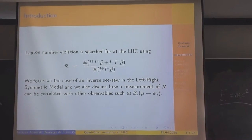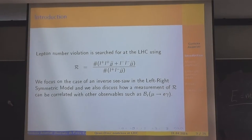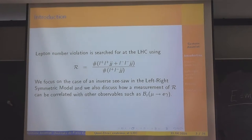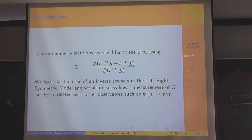The lepton number violation is studied at LHC using same-sign lepton production plus two jets, and opposite-sign lepton production plus two jets, from the production and subsequent decay of heavy neutrinos. The expected value for the ratio between these two kinds of events is one for Majorana neutrinos and zero for Dirac neutrinos. We point out that values varying continuously in this range are also a possibility, and we discuss how a measurement of this ratio can be correlated with other observables such as the branching ratio of mu to gamma.